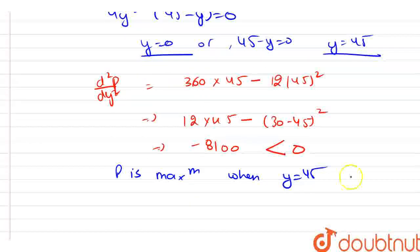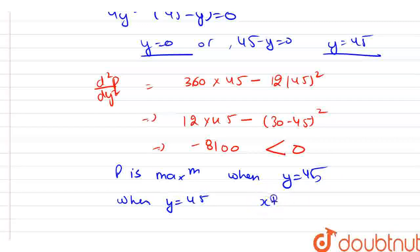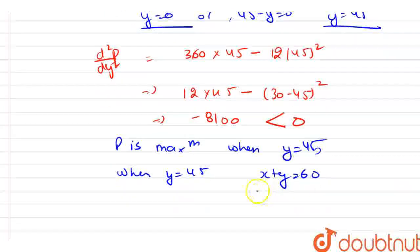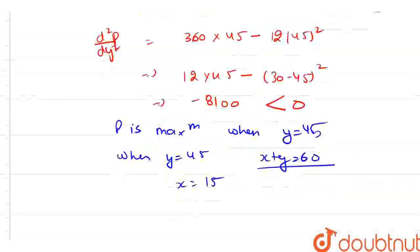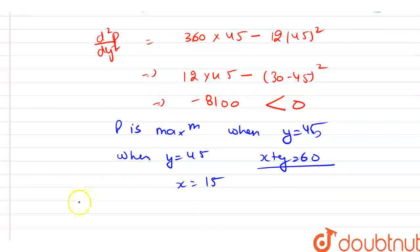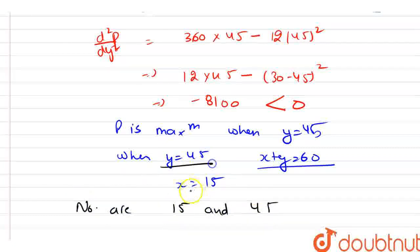When y is equal to 45 and x plus y is equal to 60 as given in the question, x will be 15. So the two numbers are 15 and 45, and this is our final answer.